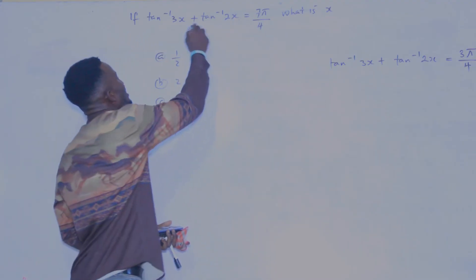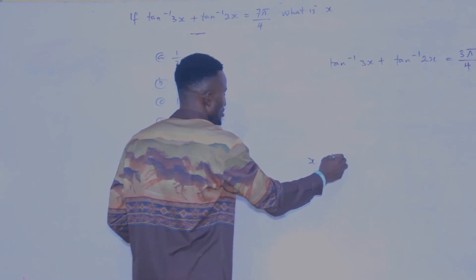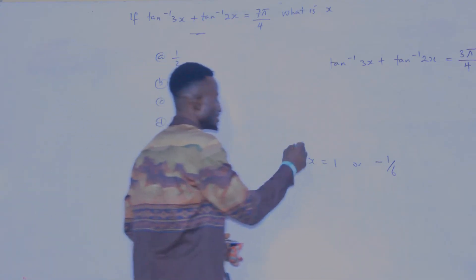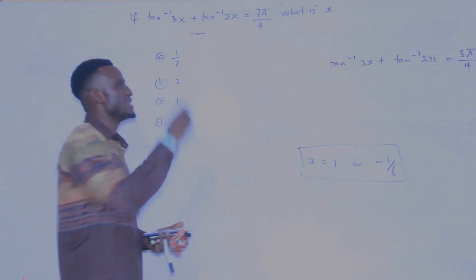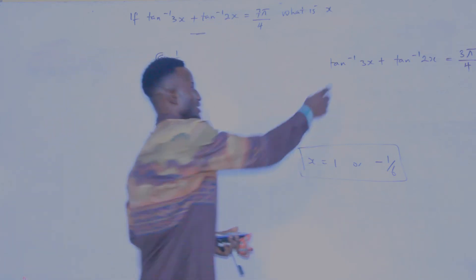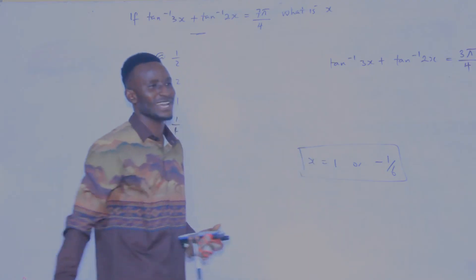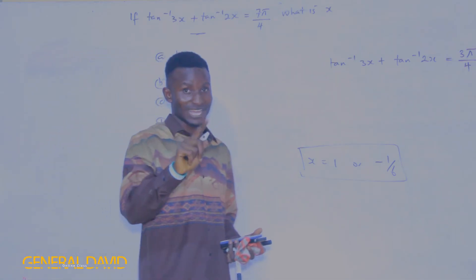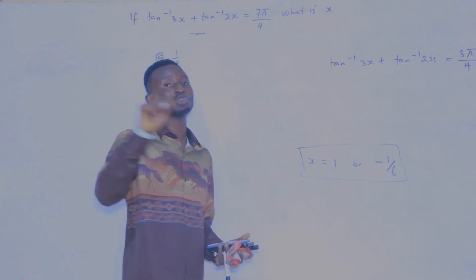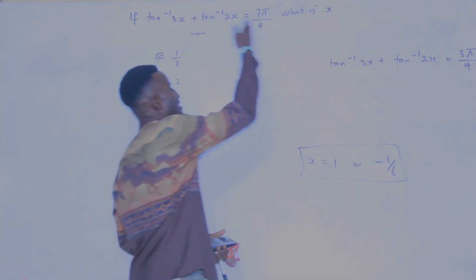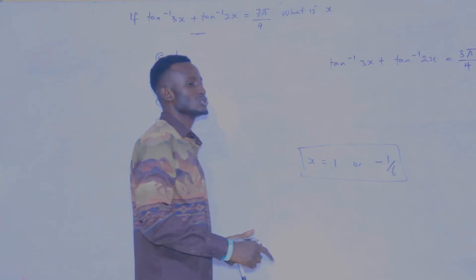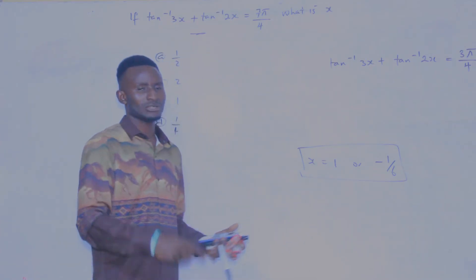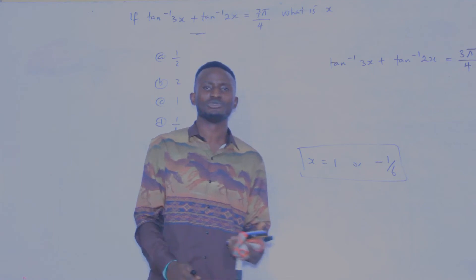For the same question structure, don't forget that when we solved it we got x equals one or x equals minus one over six. You will not believe me that if you pass through the same method I used, you are still going to get the same value of x for the 3π/4 version. So the answer for this and the answer for that are the same. But if you use software X on your calculator, you can only get one answer — you cannot get the second one.